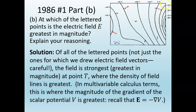The electric potential is changing the fastest at point T, so the electric field is strongest there. It turns out you'd have gotten some credit for listing point U, because the graders were merciful to students who interpreted the question as referring only to the three labeled points from Part A. But you have to read directions carefully — in other years they might not have been so merciful, and the definitive answer is point T.